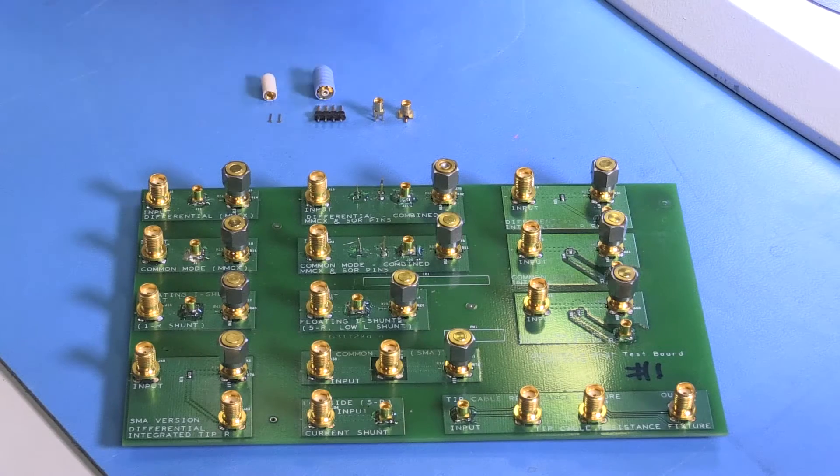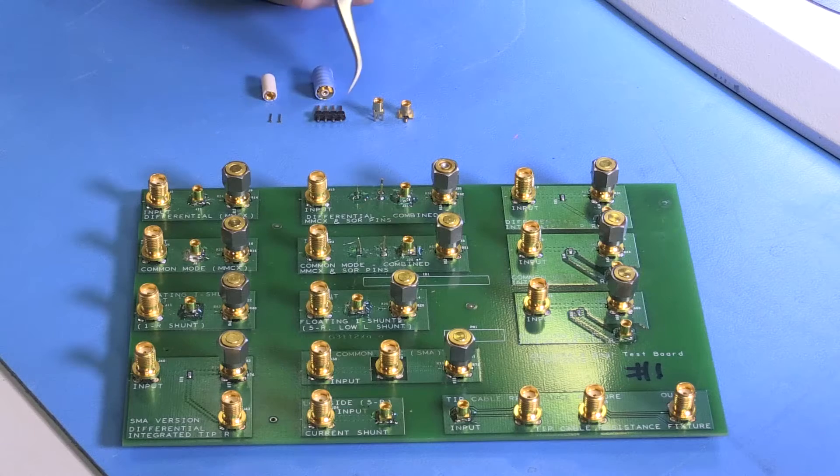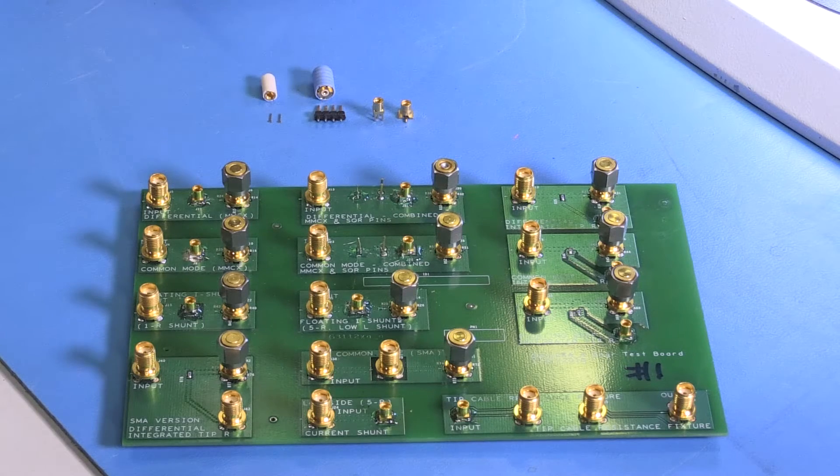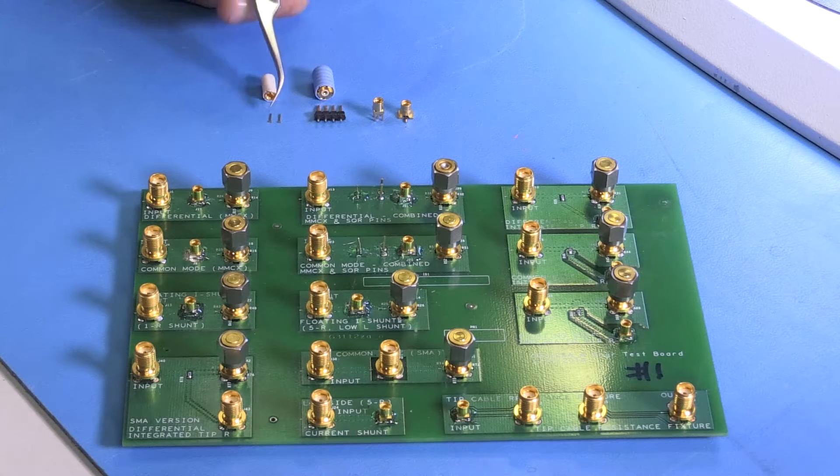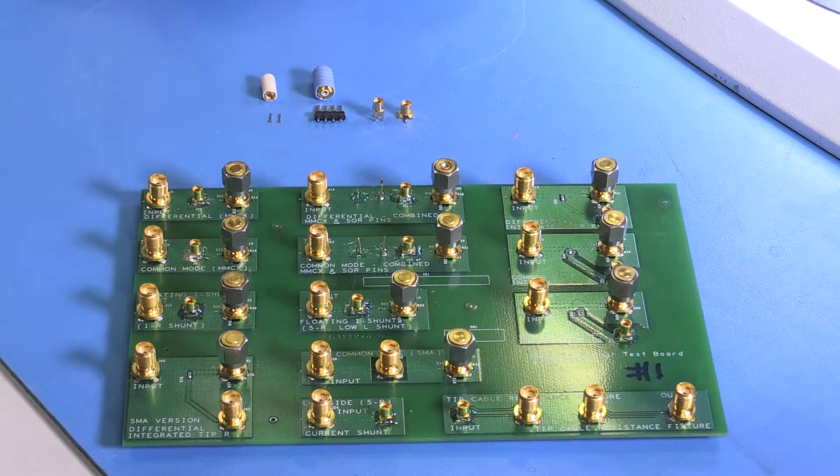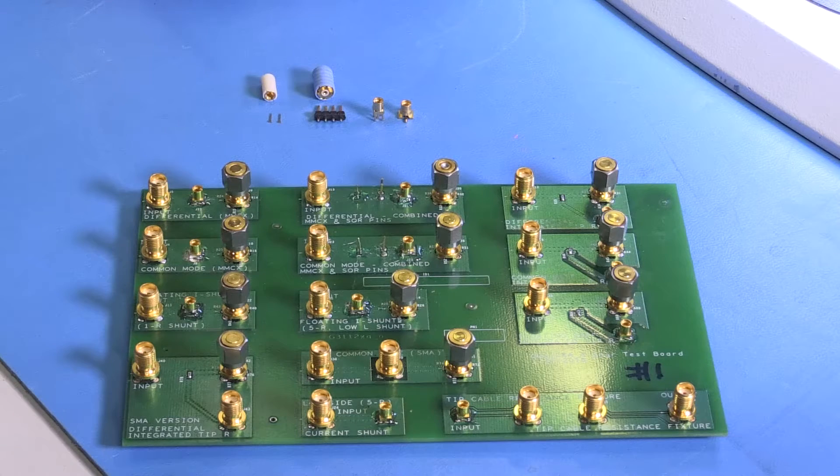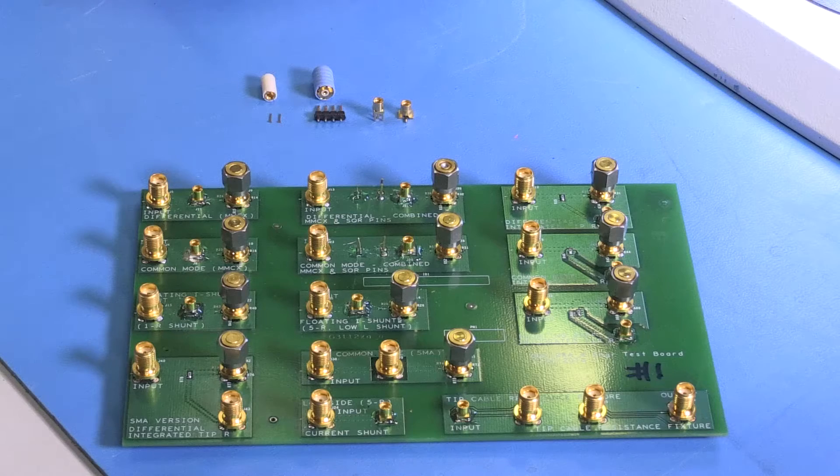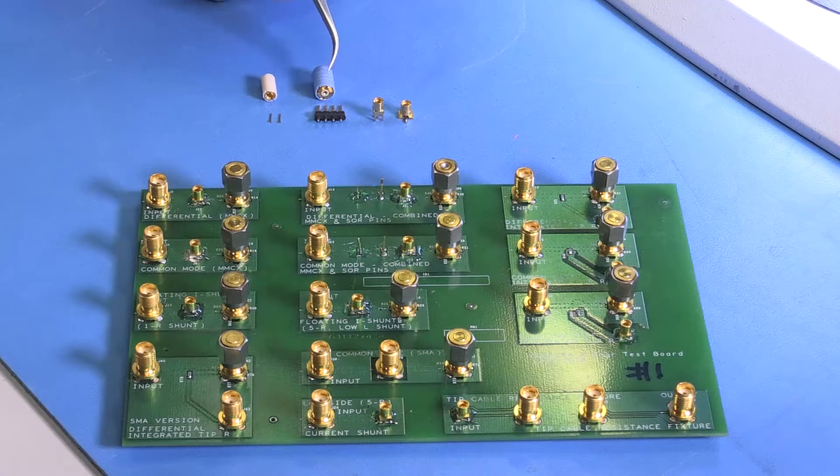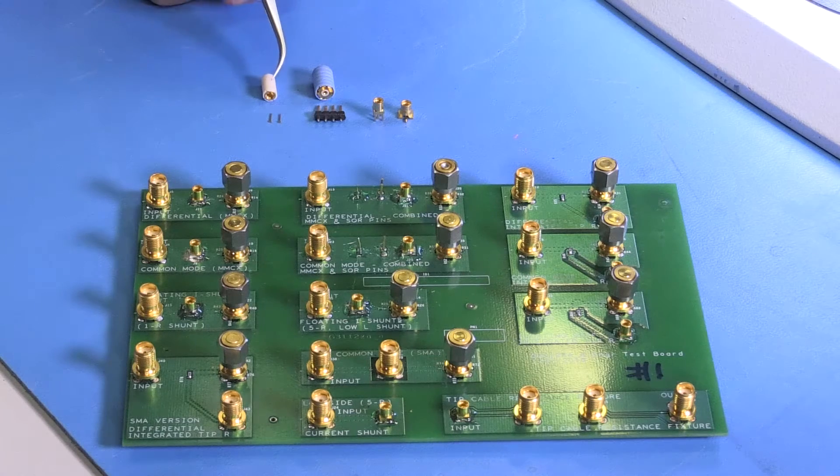These include using a coaxial MMCX connector, using standard 25 mil square pins on 100 mil centers, or using some 18 mil round pins on 62 mil centers that we include with the ISOVUE accessory kit. We include the adapters necessary to adapt the ISOVUE tip cable to these round or square pins and still provide good electrical performance.